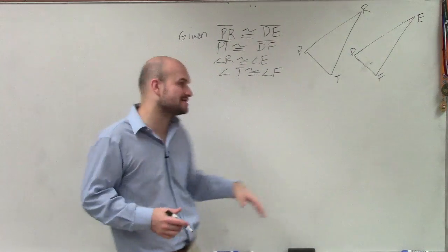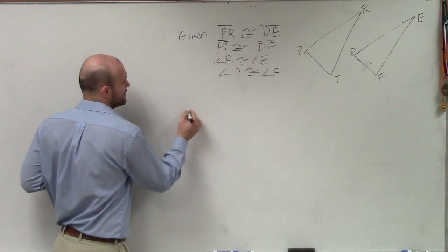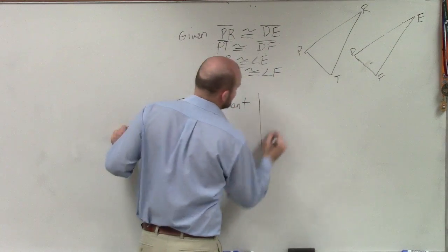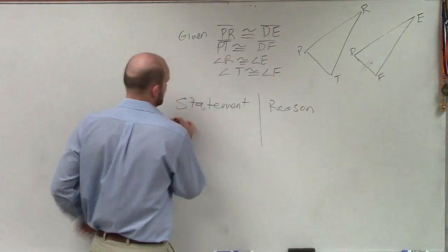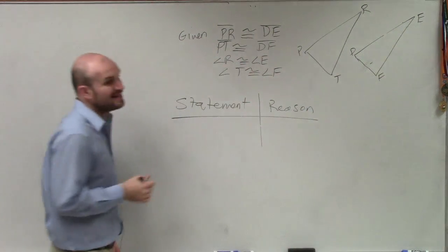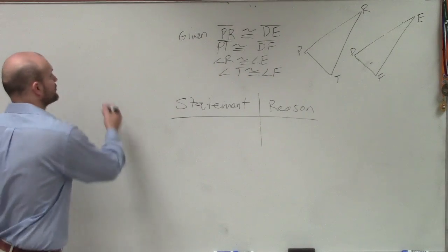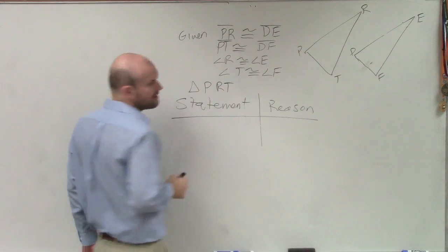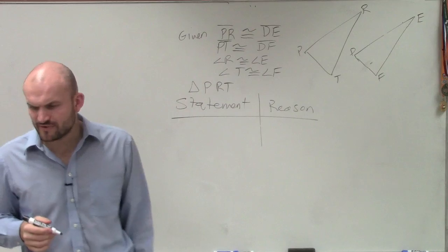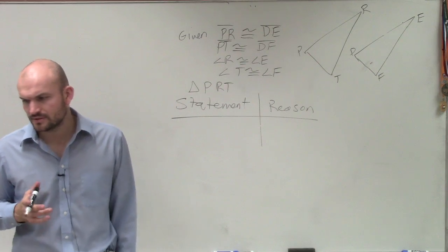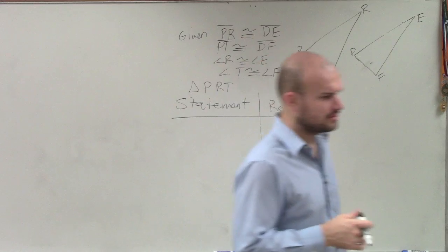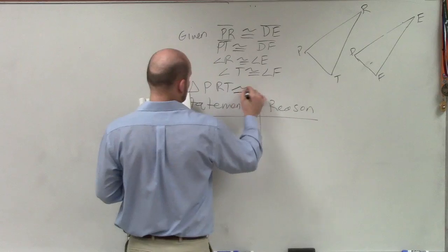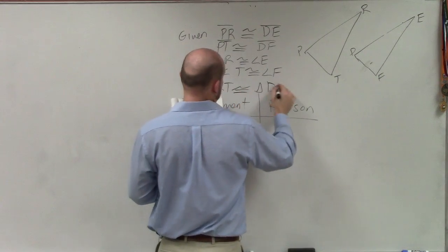I know this problem already did it, but I'm just going to practice it through. So if I want to have a proof, we're going to start with a statement and a reason. So the first thing, again, is just to give us our givens. Actually, we need to prove triangle PRT. Is that what we're trying to prove again? We're trying to prove actually the angles, or what are we asking you to prove? So prove PRT is congruent to triangle DEF.